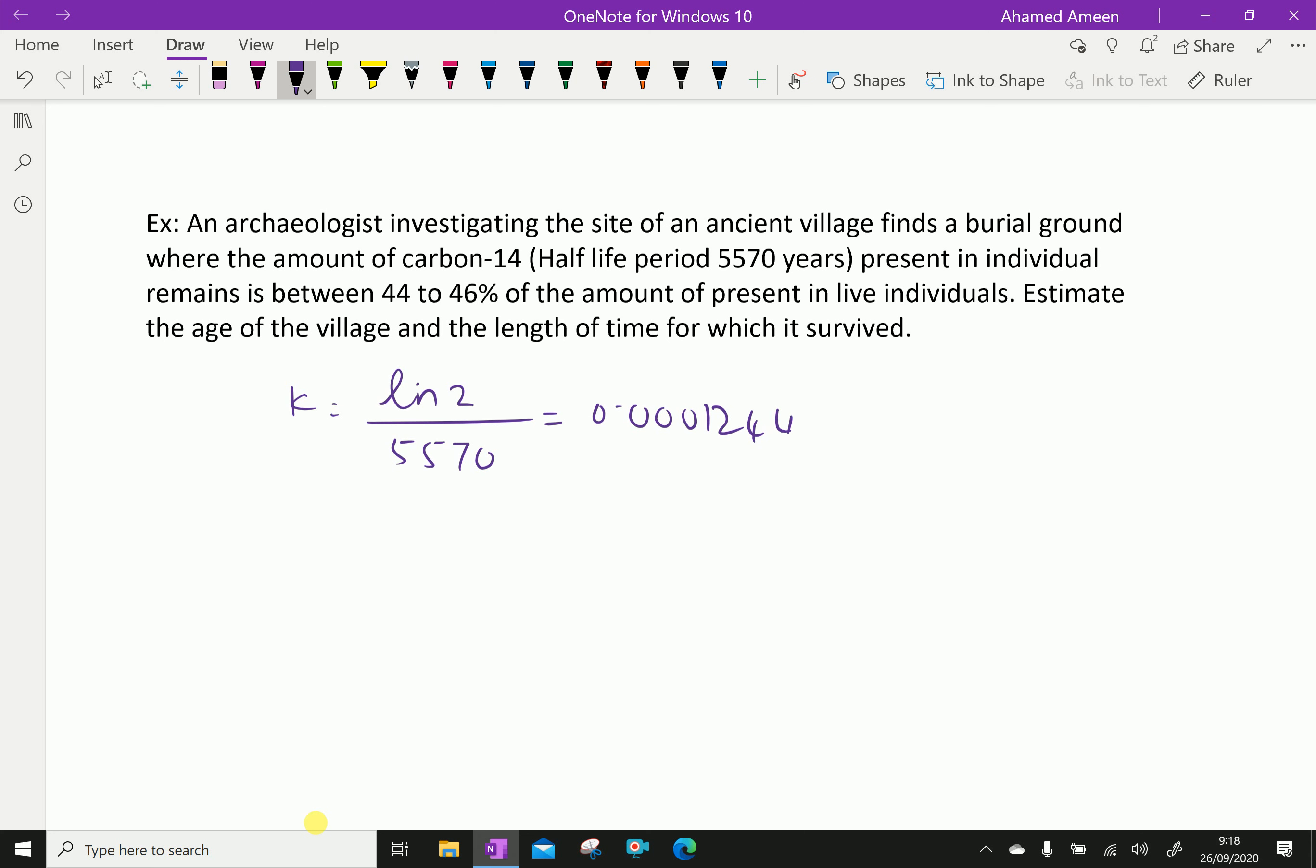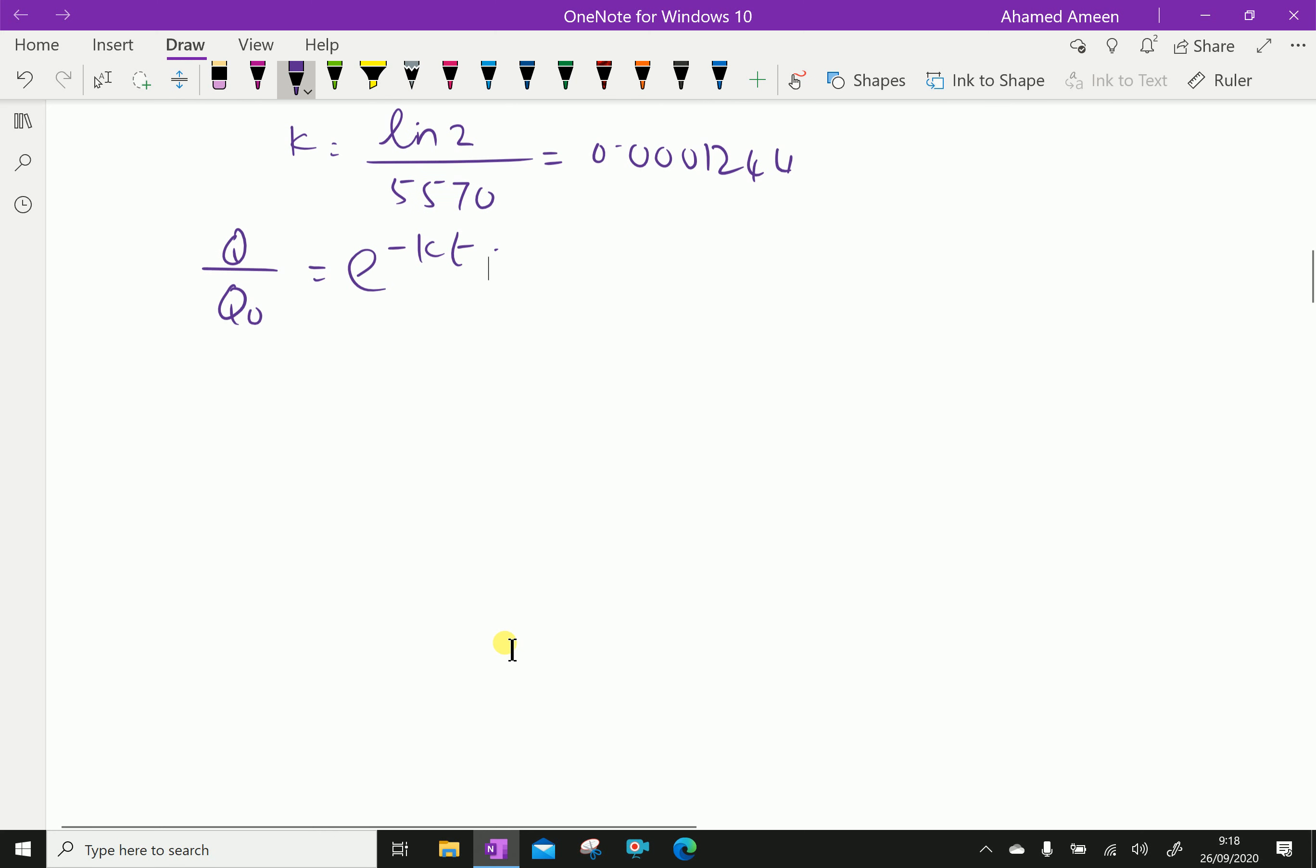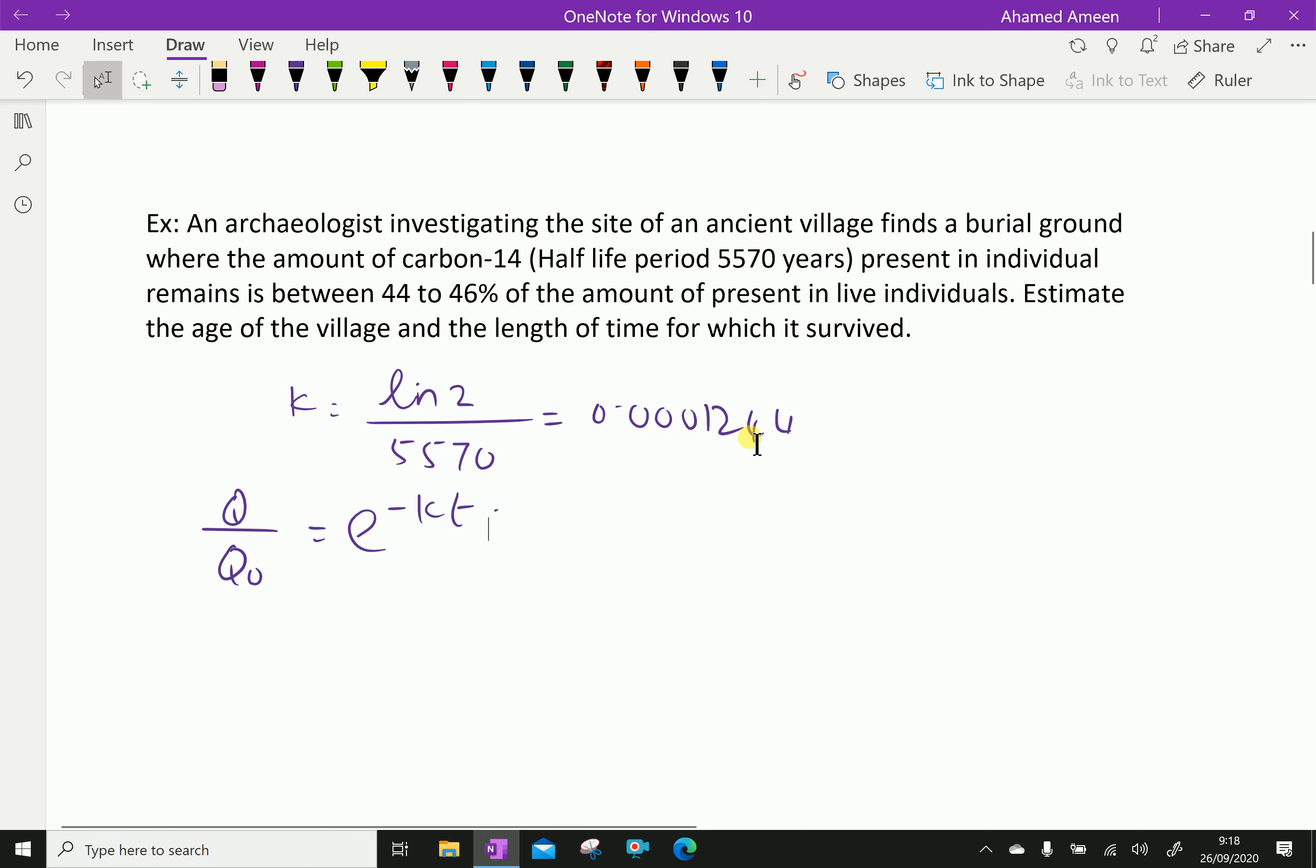Now, we know that Q over Q0 equals e to the power minus kt, the exponential equation. Then, here Q by Q0 is 44 percent. For 44 percent, we have Q by Q0 equals 0.44 equals e to the power minus k value 0.0001244 times t.